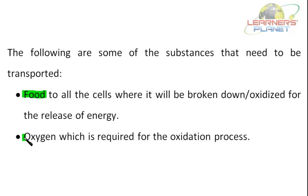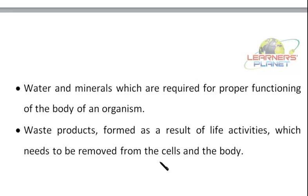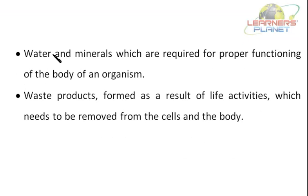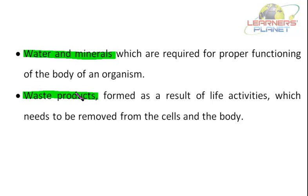The second substance that needs to be transported is oxygen, which is required for the oxidation process. The third substance is water and minerals, which are required for the proper functioning of the body. And lastly, waste products — formed as a result of life activities — need to be removed from the cells and the body.